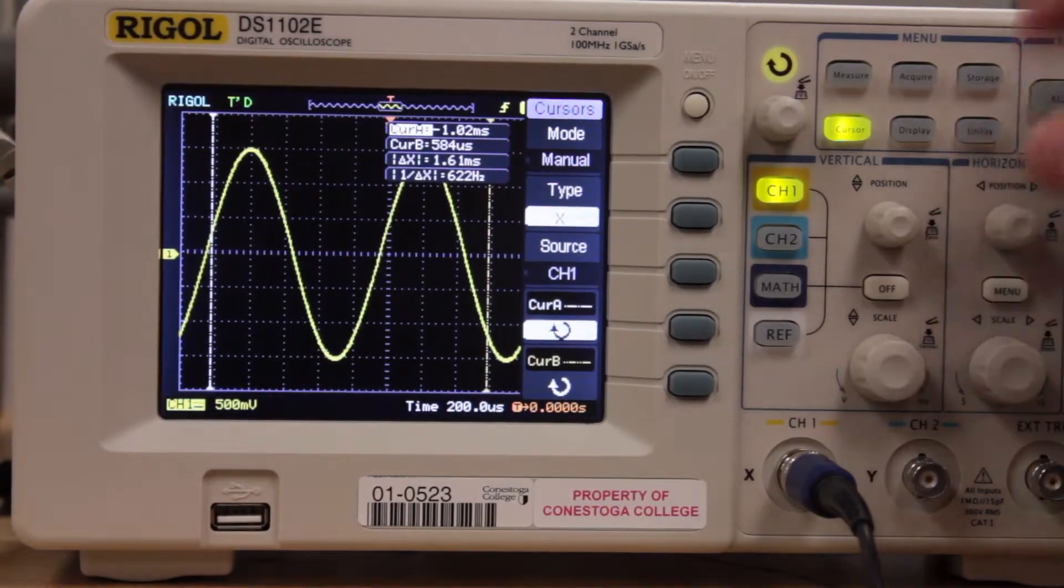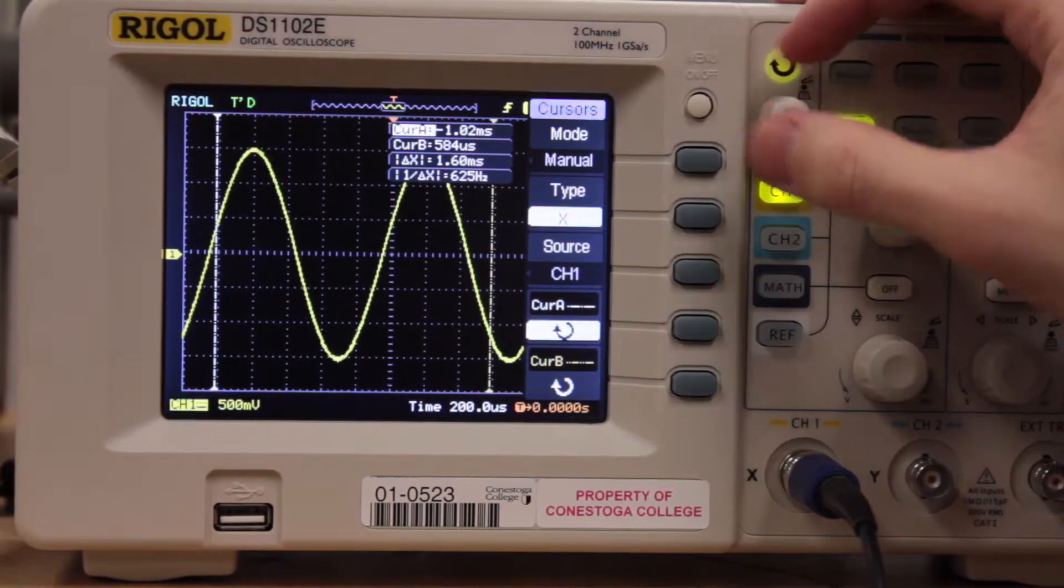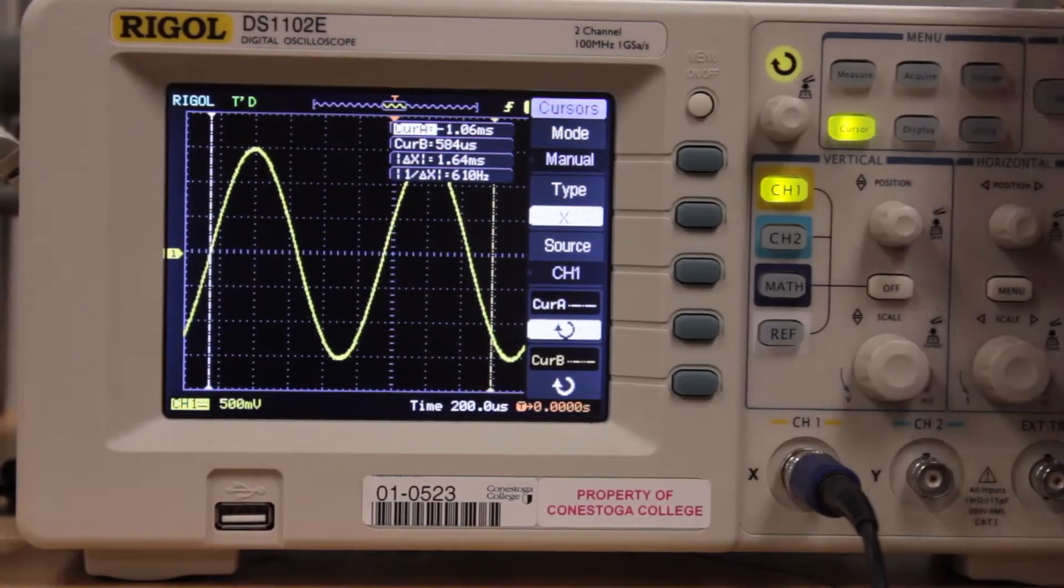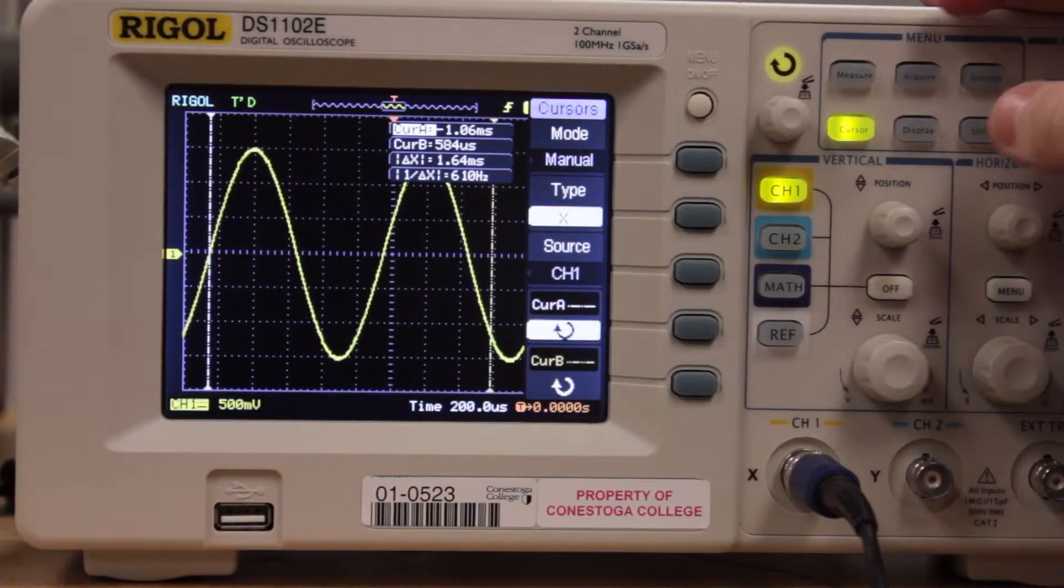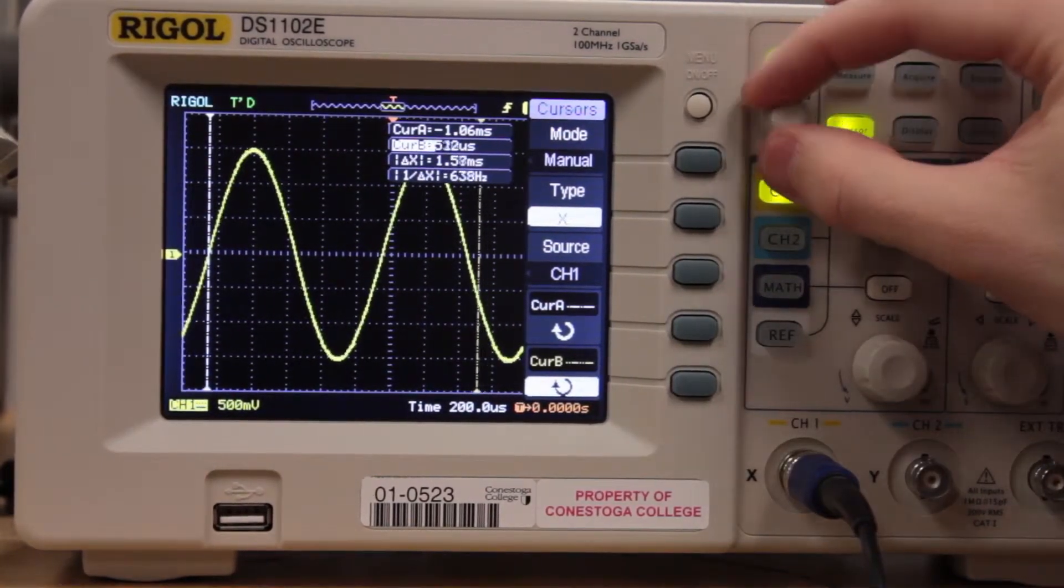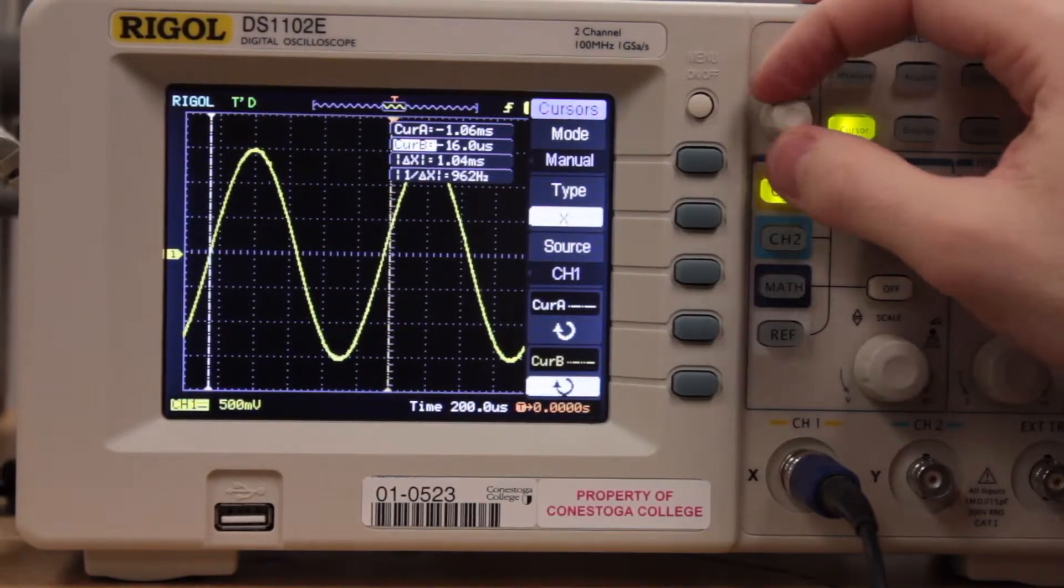And I think that's a little too tight. So there we go. And now we can actually move our cursors to a single similar spot, which is probably the rising x-intercept here.